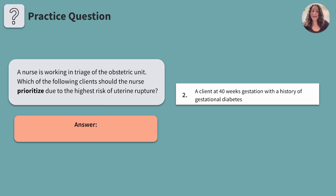Number two: a client at 40 weeks gestation with a history of gestational diabetes. Gestational diabetes increases the risk of macrosomia, or increased birth weight, shoulder dystocia, and complications related to blood glucose levels. While gestational diabetes can cause pregnancy complications, it does not directly increase the risk of uterine rupture, so let's cross this one off and keep reviewing.